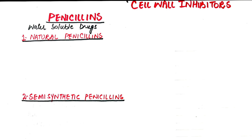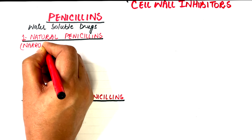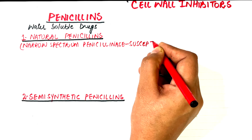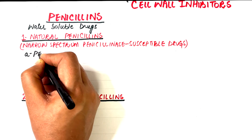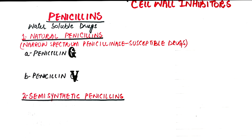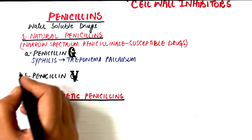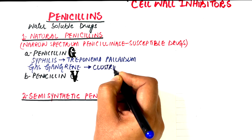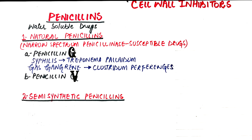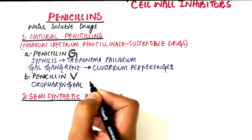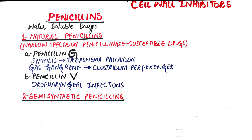The natural penicillins are narrow-spectrum penicillinase-susceptible drugs. These are penicillin G and penicillin V. Penicillin G is the drug of choice for syphilis caused by Treponema pallidum and for gas gangrene caused by Clostridium perfringens. Penicillin V is mainly used in oropharyngeal infections. The drug can survive really well in the acidic environment of the stomach, which is why it is only given in oral formulations.